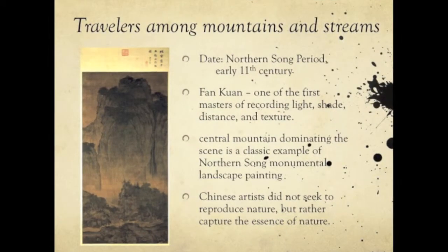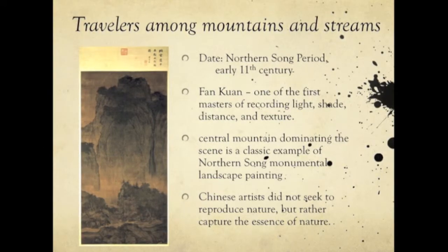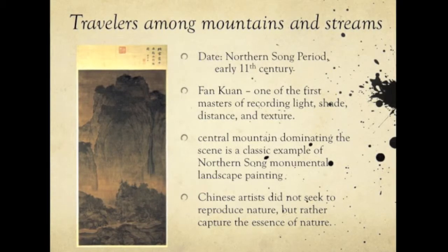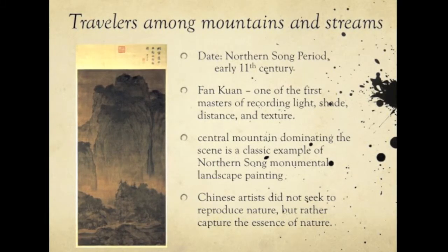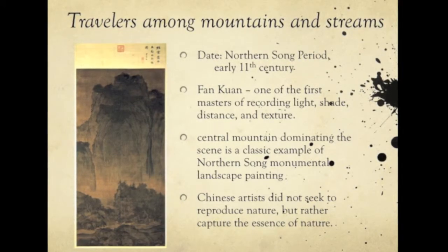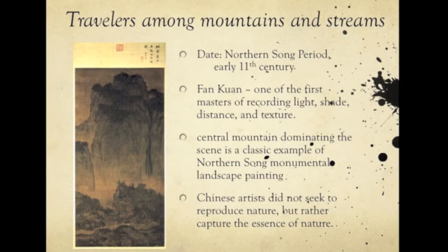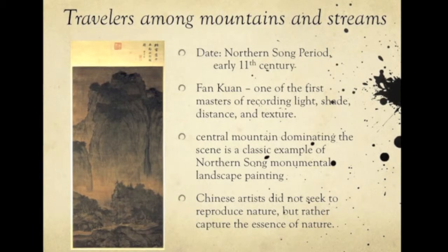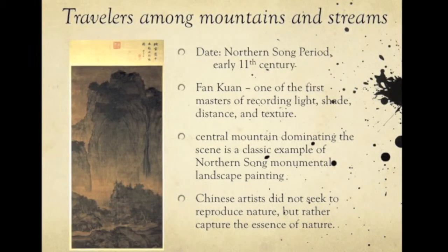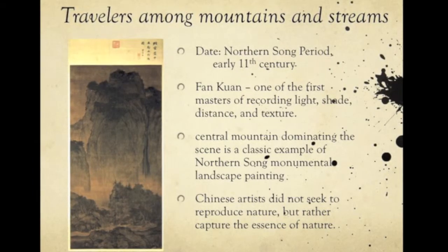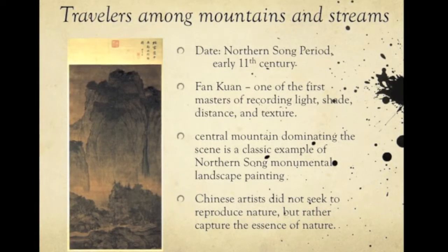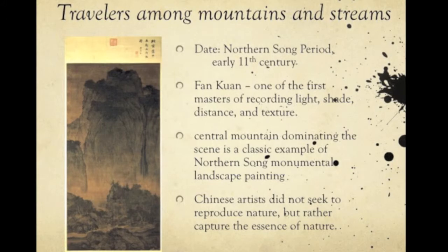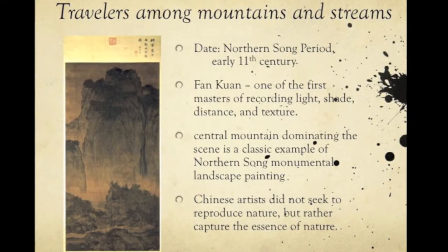Travelers Among Mountains and Streams was done in the early 11th century by Fan Kuan, one of the first masters of recording light, shade, distance, and texture. He secluded himself among forests and mountains, devoting himself to observing the effects of atmospheric weather and seasonal changes on the scenery. Running along the central axis of the scroll, the central mountain dominates the scene — a classical example of northern Song monumental landscape painting. For Western comparison, Chinese artists did not seek to reproduce nature as Italian painters did centuries later, but rather to capture the essence of nature.